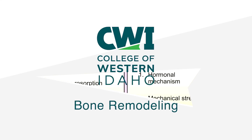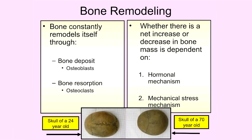In the last video, we talked about the process by which bone is formed, known as ossification. We covered intramembranous ossification and endochondral ossification, and how these processes begin forming our bones in utero. One thing you may or may not know is that ossification is a process that continues after a baby is born, through childhood, and up to about 24 years of age.